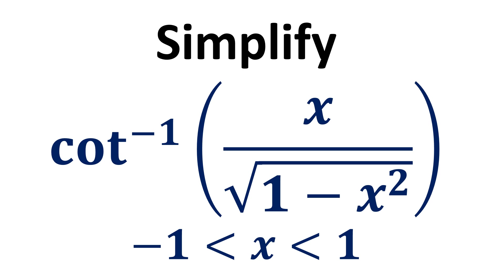In this video, we learn to simplify the inverse cotangent of x upon the square root of 1 minus x squared, where the value of x is greater than minus 1 and less than 1.